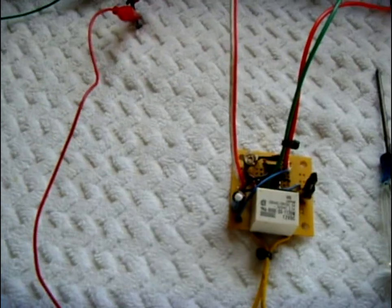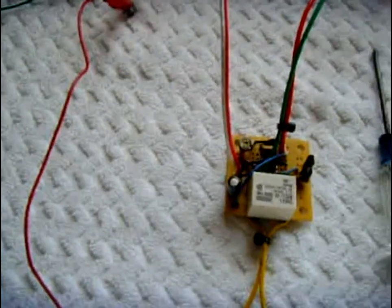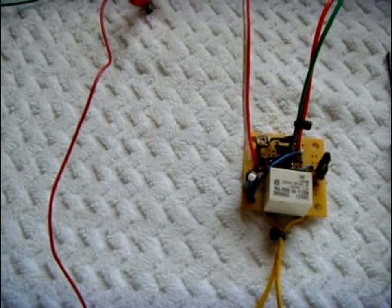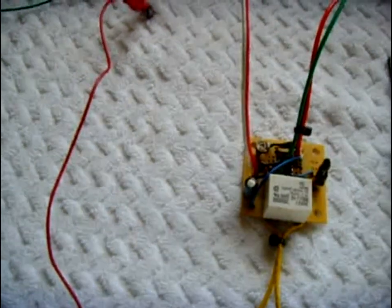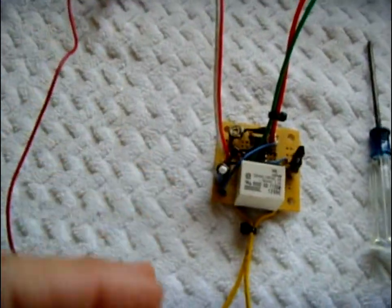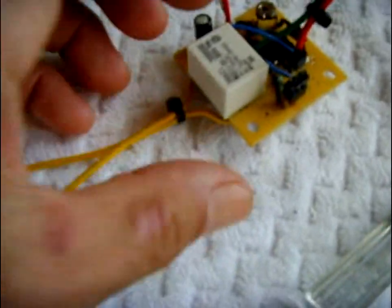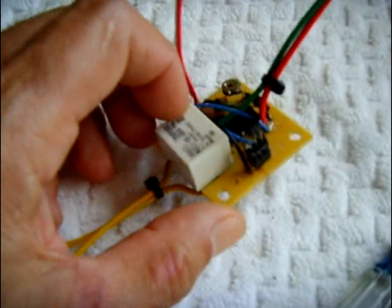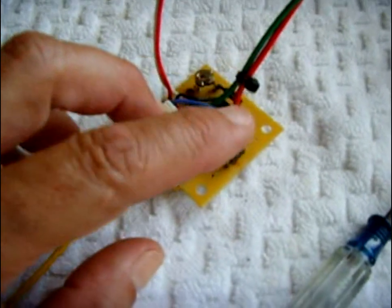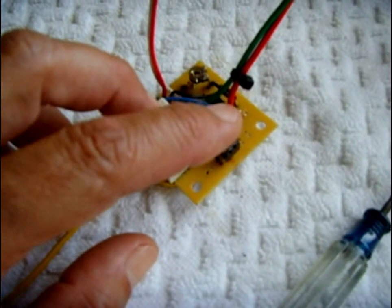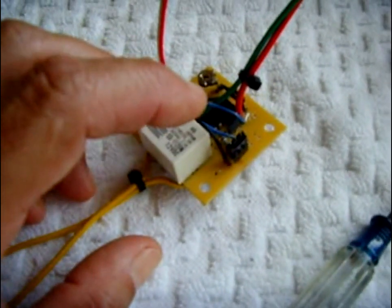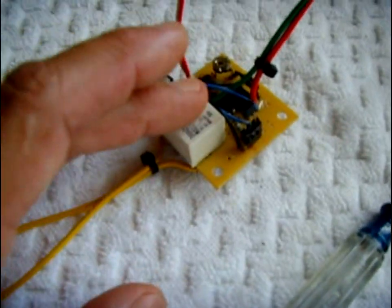This circuit will come in very handy for people looking for a relay that will trigger with temperature. This particular one goes on a small board depending on which transistor you use. If you use the PNP, which I use the BC557, or you can use a 2N3906.